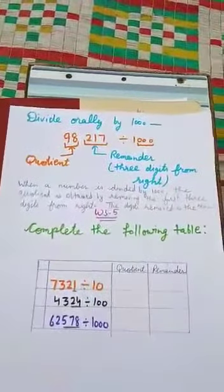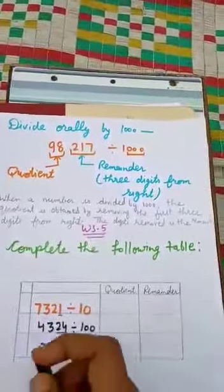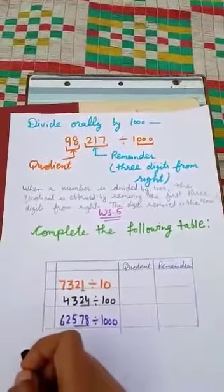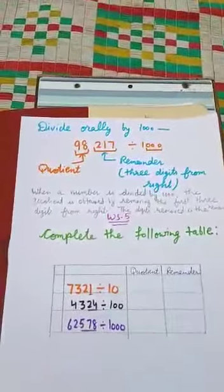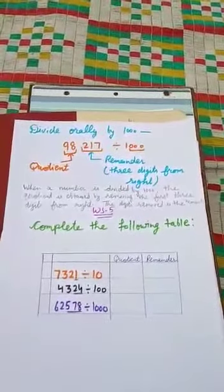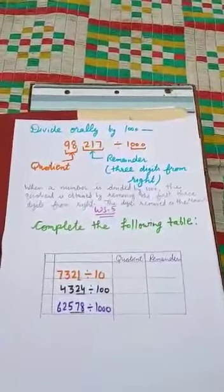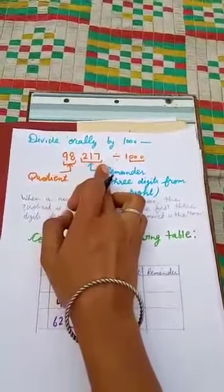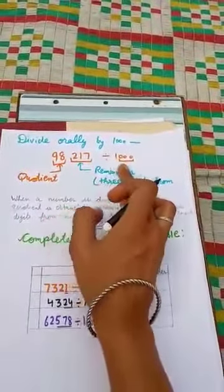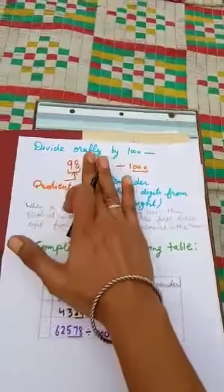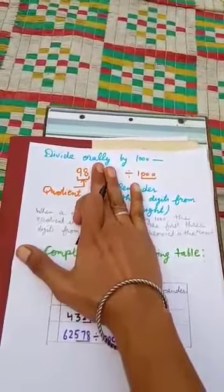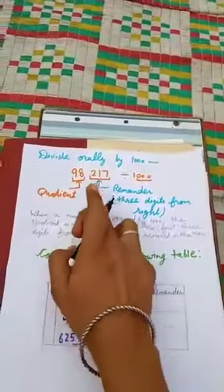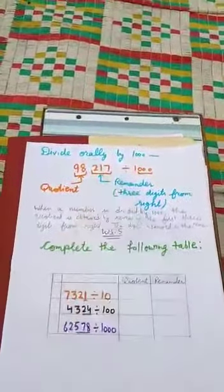Now let us divide 98217 by 1000. When a number is divided by 1000, the quotient is obtained by removing the first three digits from the right and the digits removed are the remainder. When we divide 98217 by 1000, to get the quotient, we will remove the last three digits from the right. So 98 is the quotient and 217 is the remainder.